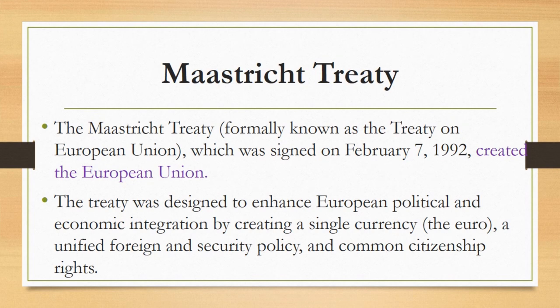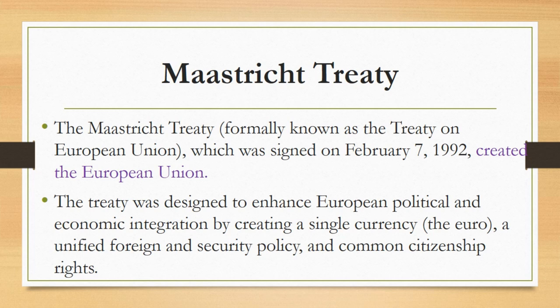Maastricht Treaty: The Maastricht Treaty, formally known as the Treaty on European Union, was signed on February 7, 1992, and created the European Union. The treaty met with substantial resistance in some countries. In Denmark, voters defeated a referendum on the original treaty in June 1992, though a revised treaty was approved the following May. Voters in France narrowly approved the treaty in September. In July 1993, British Prime Minister John Major was forced to call a vote of confidence to secure its passage. An amended variant of the treaty officially took effect on November 1, 1993.